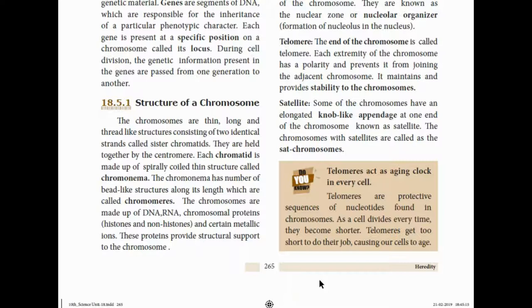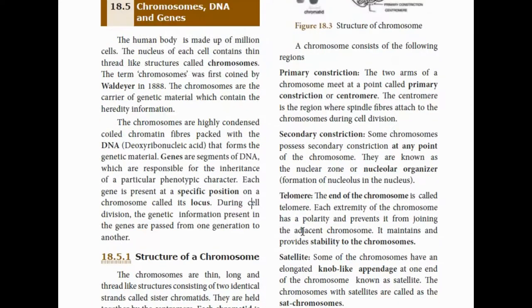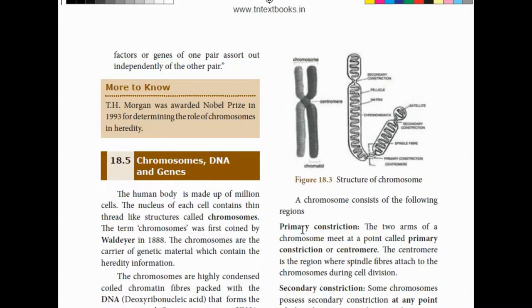Chromosomes are thin, long and thread-like structures consisting of two identical strands called sister chromatids. They are held together by the centromere. Each chromatid is made up of a spirally coiled thin structure called chromonema.